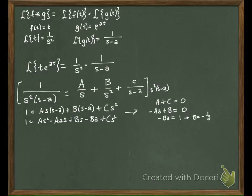If B is negative one over A, then negative A times A minus one over A will equal zero. So A is going to be negative one over A squared. And if A and C have to add to zero, what does that tell you C will be? One over A squared, positive one over A squared.